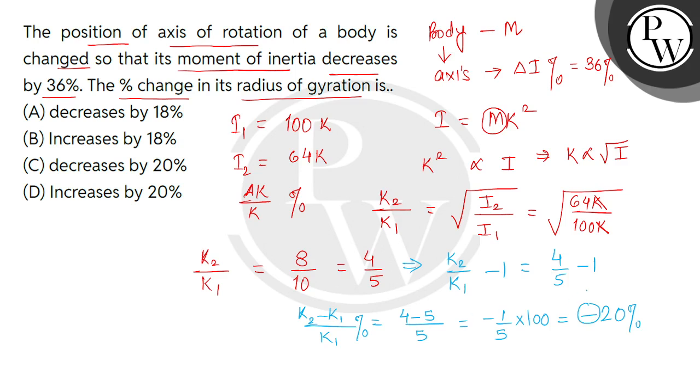The minus sign indicates that there is a decrease in the radius of gyration by 20%, so the correct answer will be option number C. Thank you.